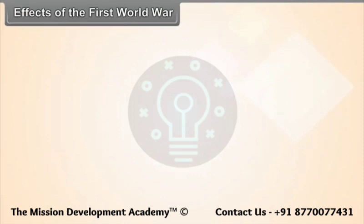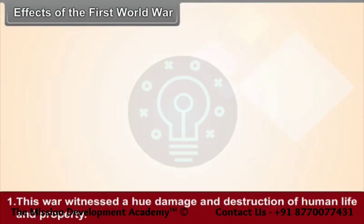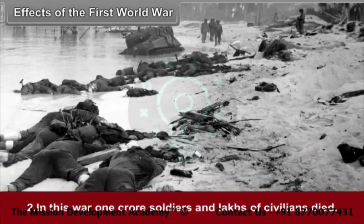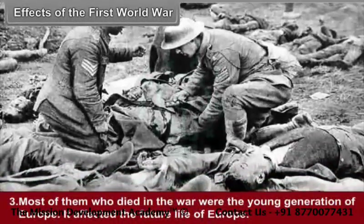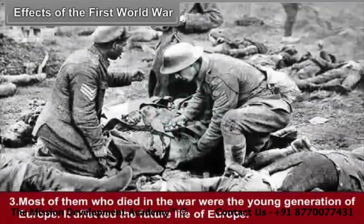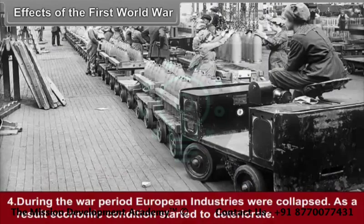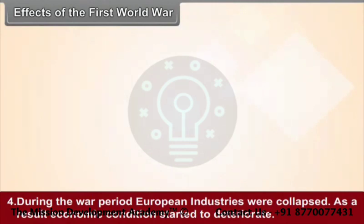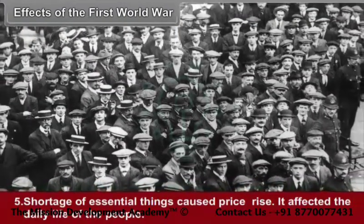Effects of the First World War (1914–1918): First, this war witnessed huge damage and destruction of human life and property. Second, one crore soldiers and lakhs of civilians died. Third, most of those who died were the young generation of Europe, which affected the future life of Europe. Fourth, during the war period, European industries collapsed. As a result, economic conditions started to deteriorate. Fifth, shortage of essential things caused price rises, affecting the daily life of the people.